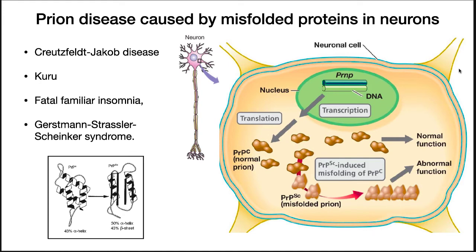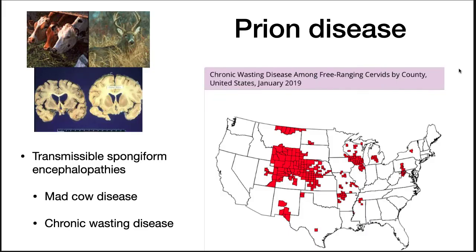Prions are infectious because the abnormal protein can cause normal proteins to change shape to the abnormal form. All human prion diseases result in progressive degeneration of the brain and death. These diseases are Creutzfeldt-Jakob disease, Kuru, fatal familial insomnia, and Gerstmann-Sträussler-Scheinker syndrome. There are also animal diseases caused by prions. Two you may have heard of are mad cow disease and chronic wasting disease. CWD currently affects 251 counties in 24 states, with reported cases in free-ranging cervids as of 2019.